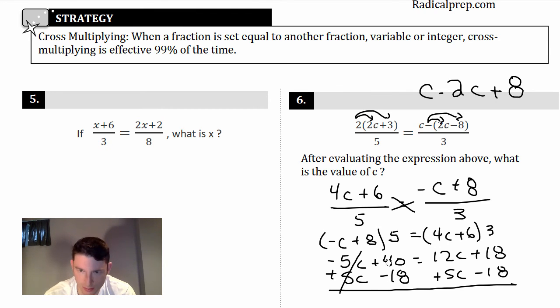So it's negative 5c + 40 = 12c + 18. Okay, so now let's move the 5c over. I'll add, so I've got to do the opposite, 5c. And here I'm going to minus 18, and minus 18.